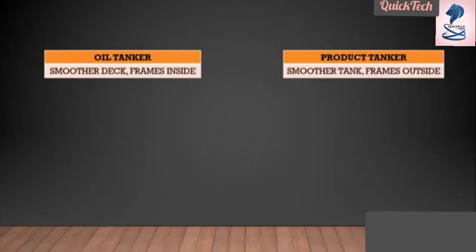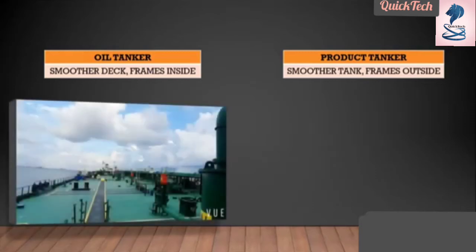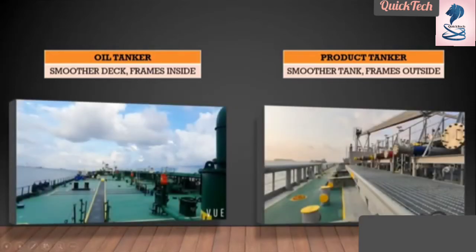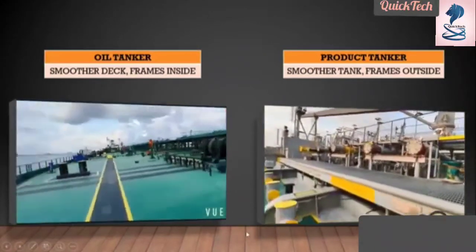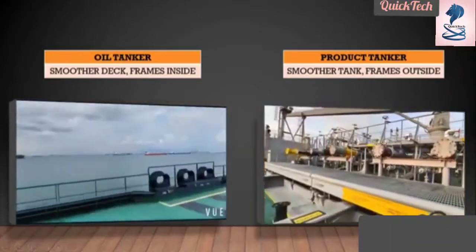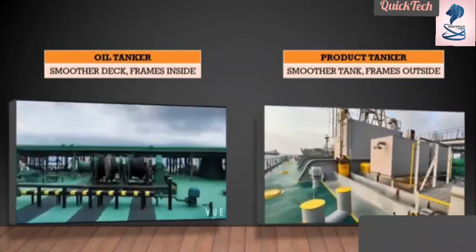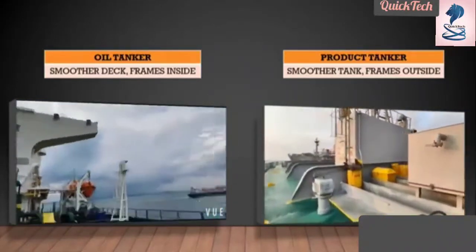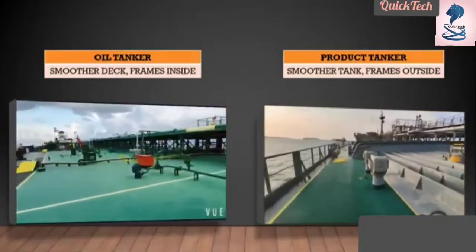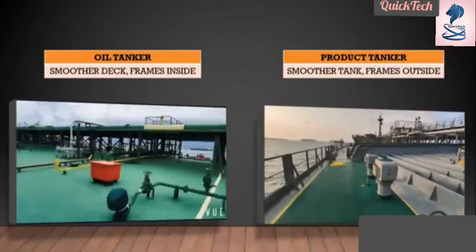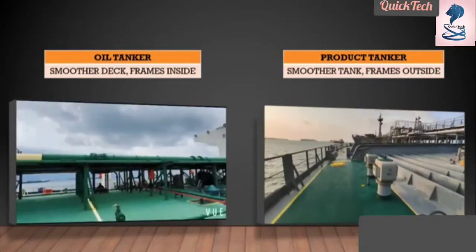As we discussed, the crude oil tanker has smoother tank frames inside, and the product tanker has frames outside. You can see clearly the crude oil tanker interior is clear and smoother, whereas the product tanker is having the frames. This is a major construction difference.